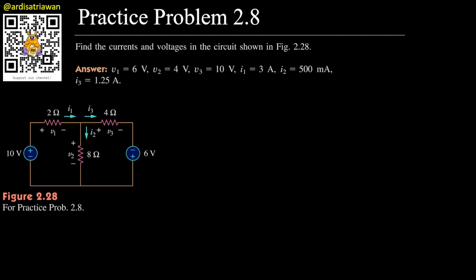Hello, my name is Ardy and we are going to solve Practice Problem 2.8 from Sadiku book. The question is find the currents and voltages in the circuit shown in Figure 2.28. There are three currents here: i1, i2, and i3.